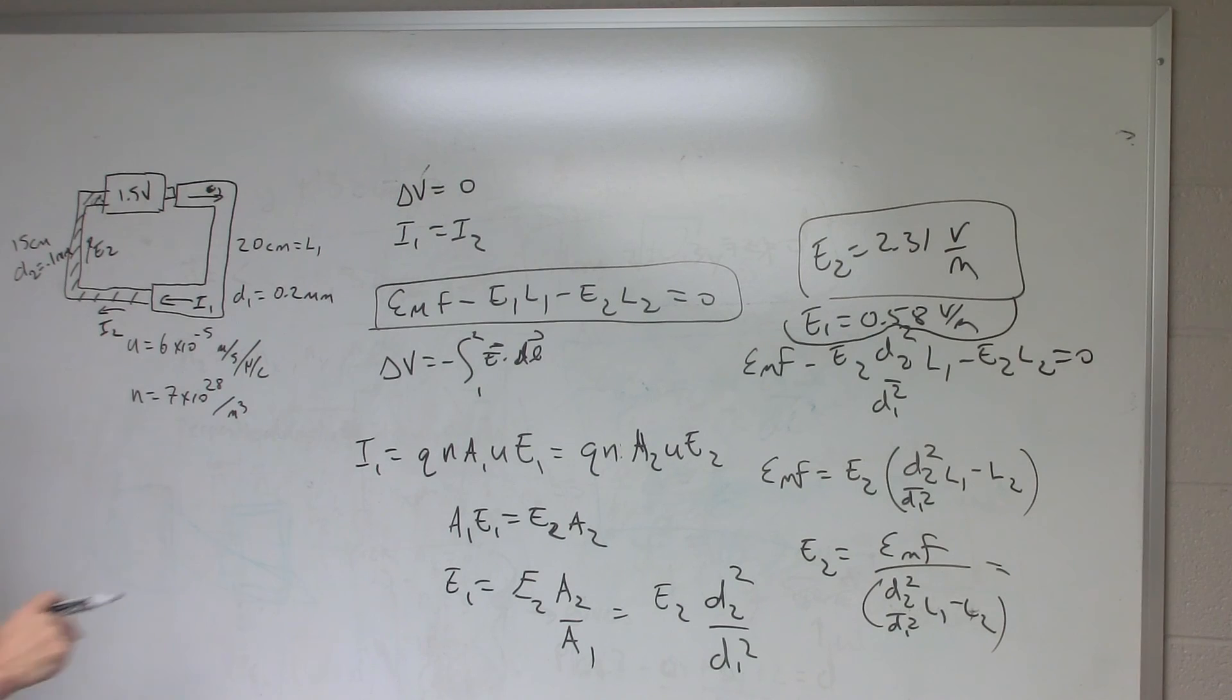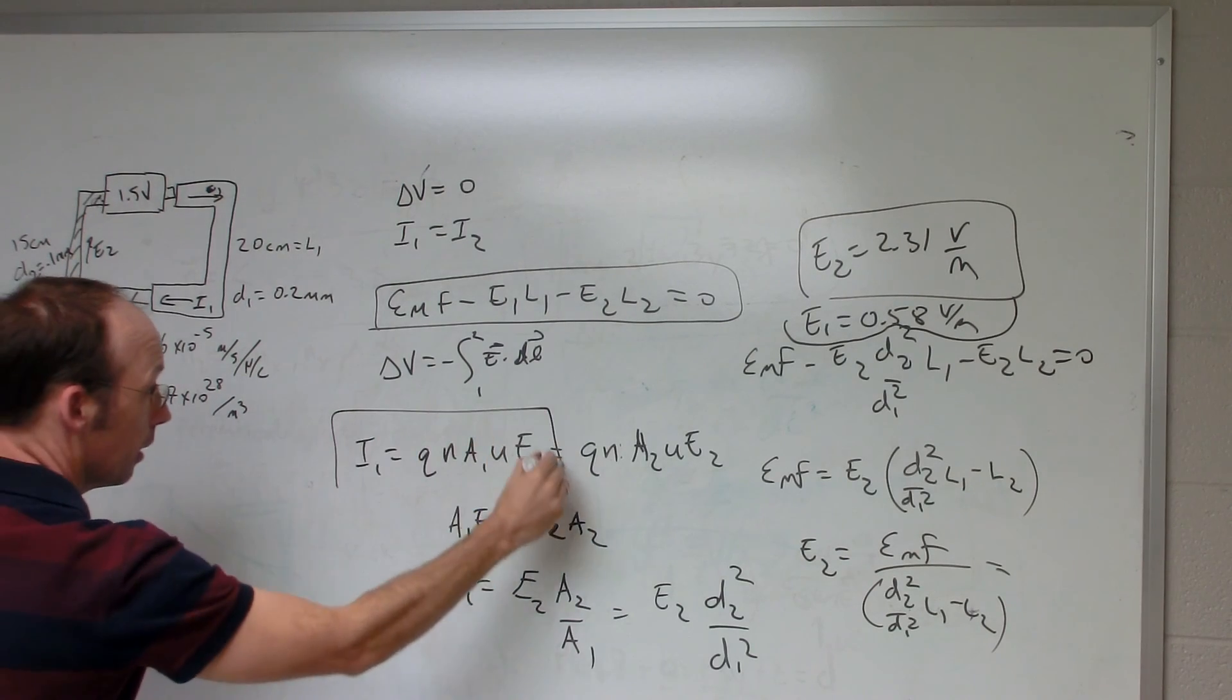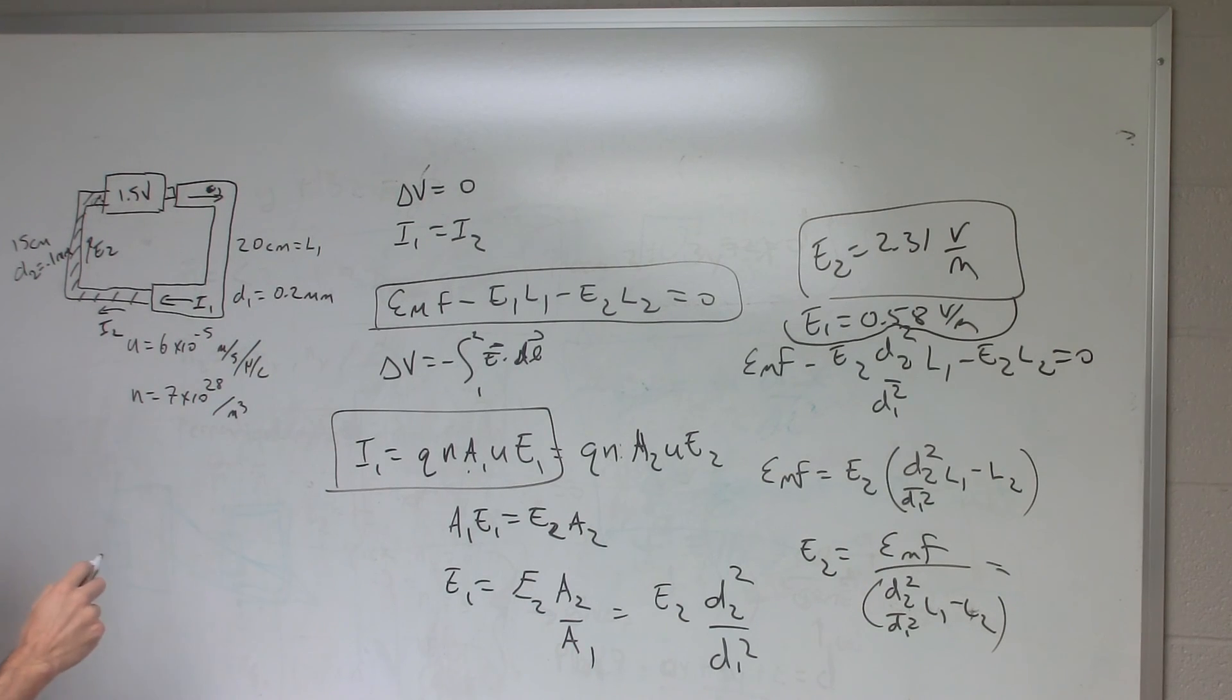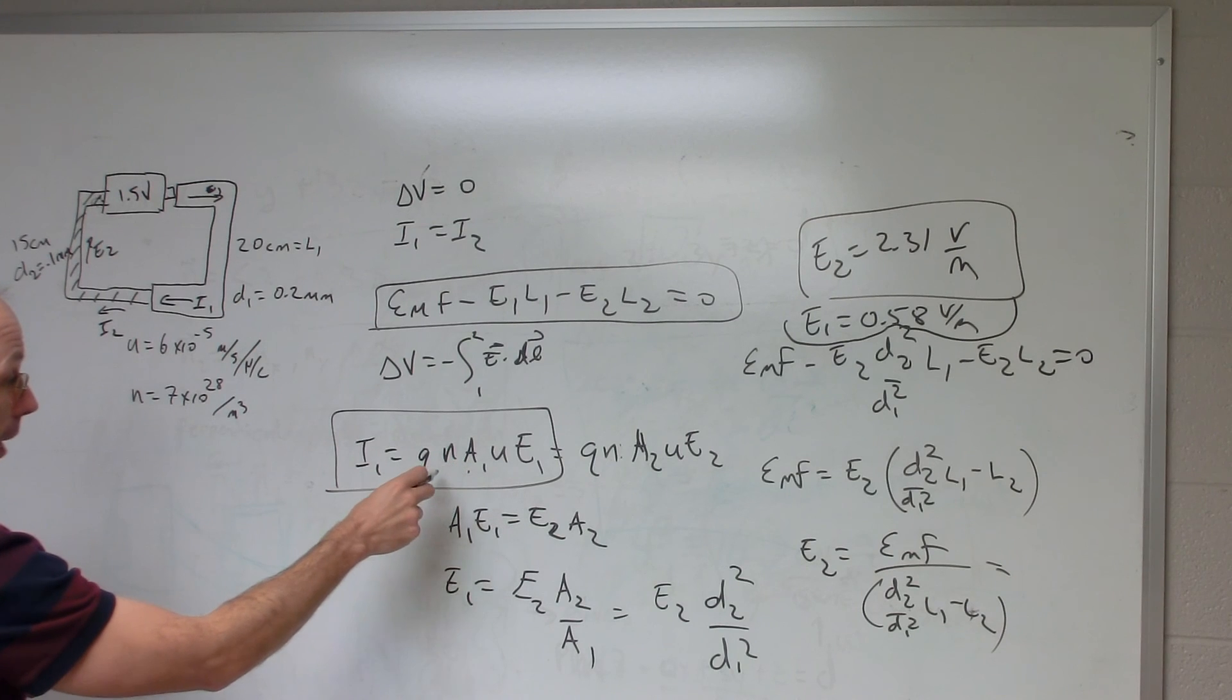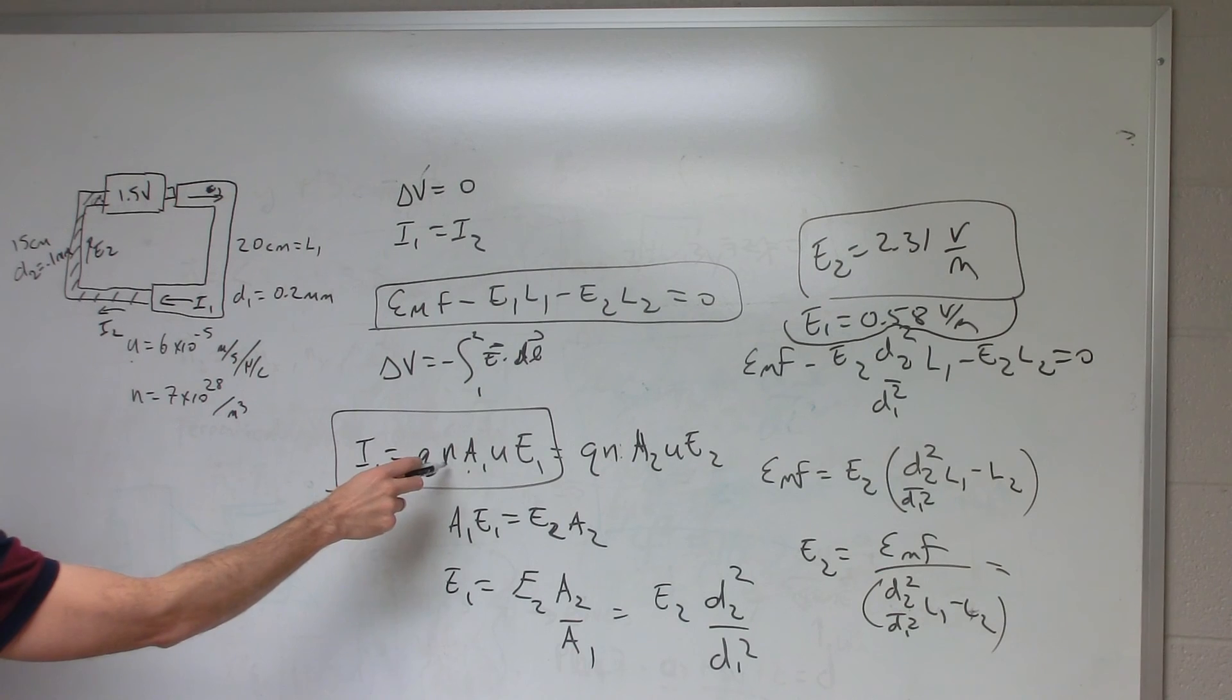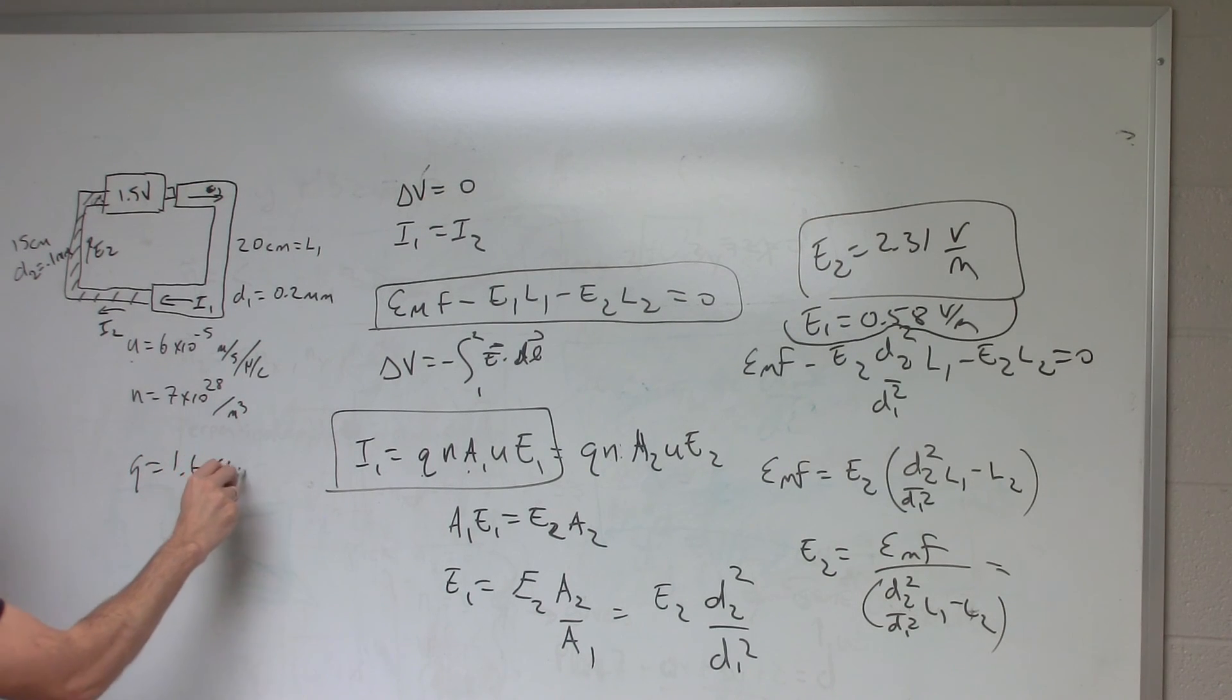Okay, now I need to solve for the current. I can just plug in here. I know A1, I'm going to have to actually convert the diameter to meters, and I'm going to have to convert everything else. But then if I have a value of U equals 6 times 10 to the negative 5th, and 7 times 10 to the 28th for N, and then Q would be 1.6 times 10 to the negative 19th. Then I have to plug that in there, and I'm not going to do it, because I'm tired. But you can do that if you want.